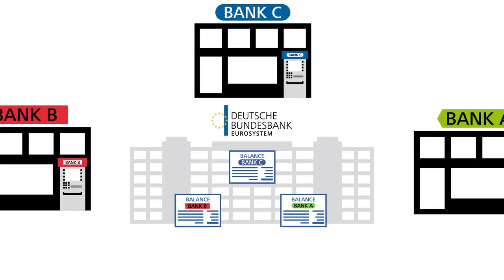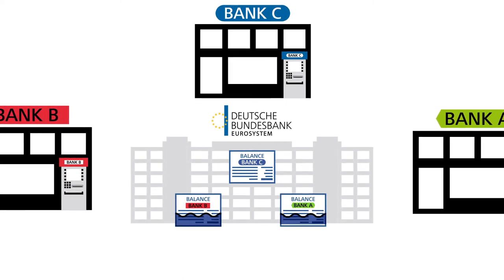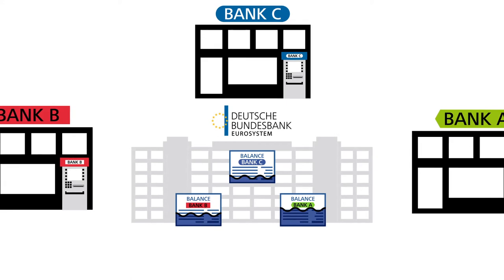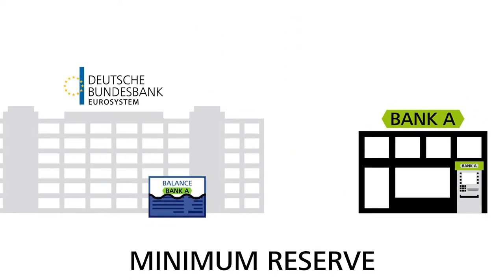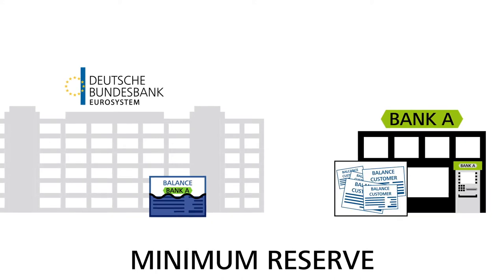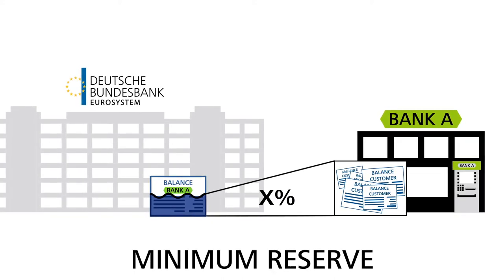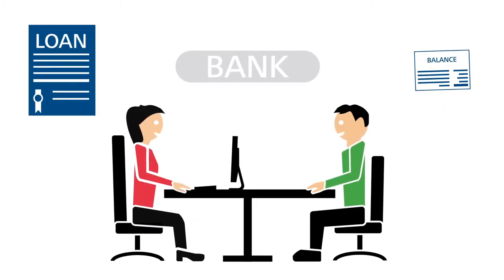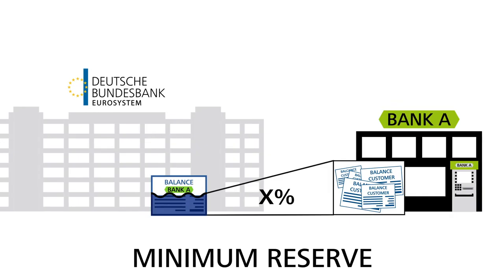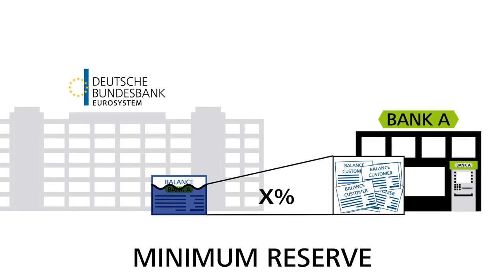But why do commercial banks need to hold balances at the central bank? First, the central bank may require commercial banks to maintain a certain minimum balance on their central bank accounts, otherwise referred to as the minimum reserve requirement. The minimum reserve amount required is calculated by multiplying customers' deposits at a bank by a percentage set by the central bank. If the banks create additional book money, they are then also required to increase their minimum reserves held at the central bank.